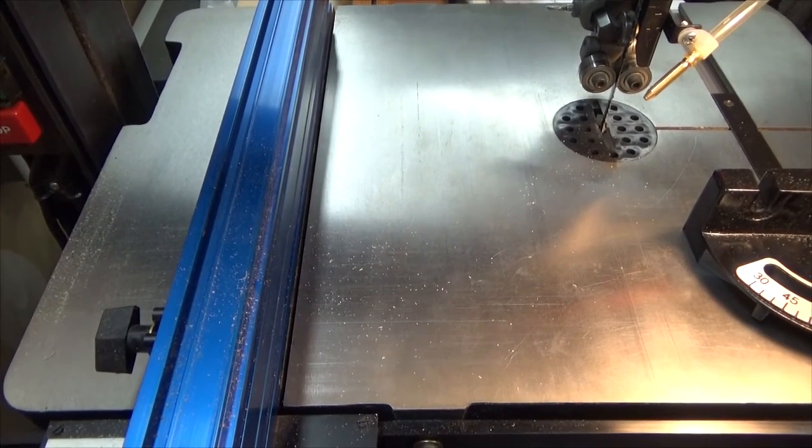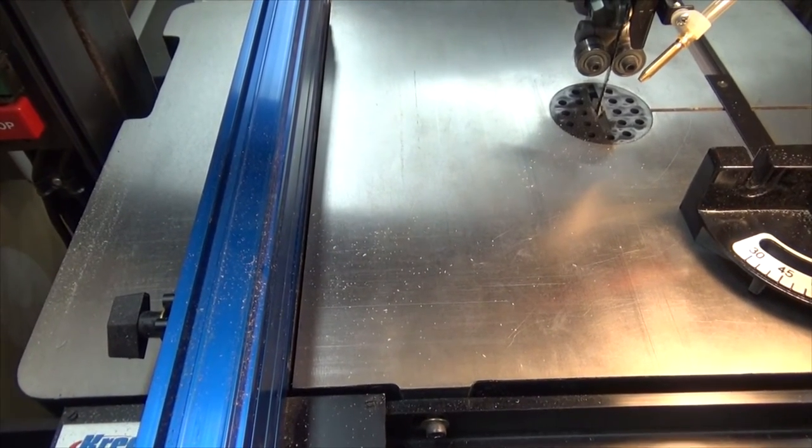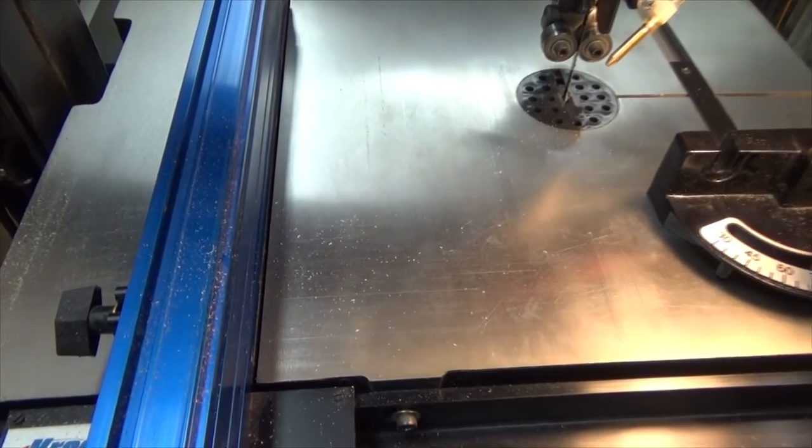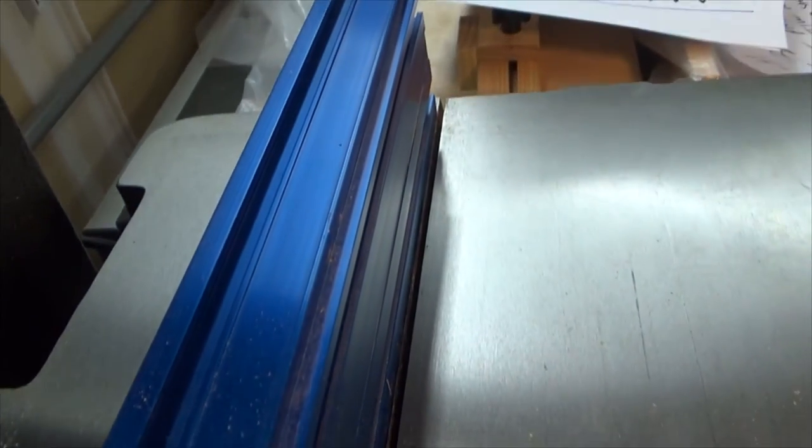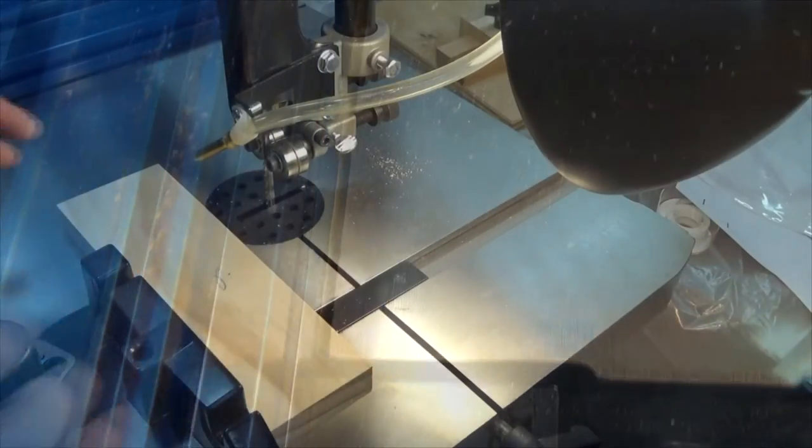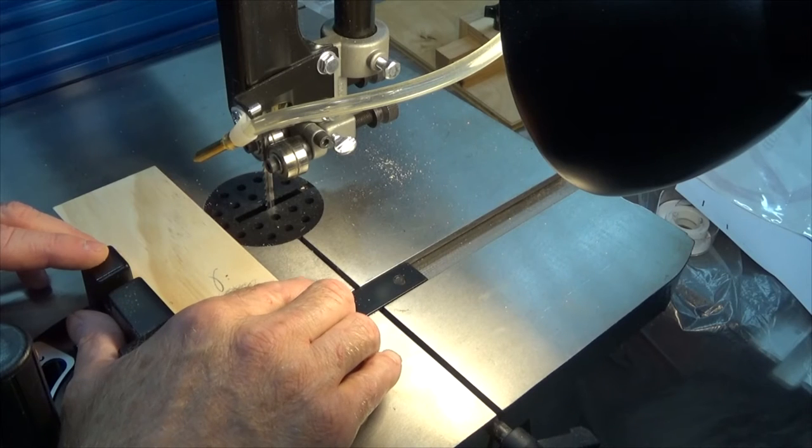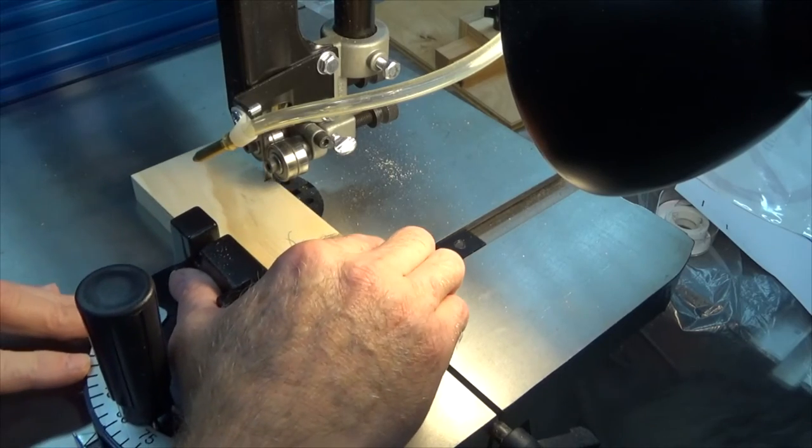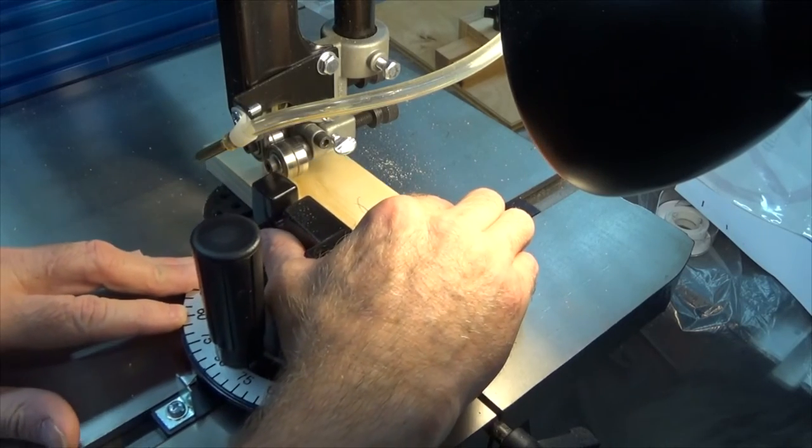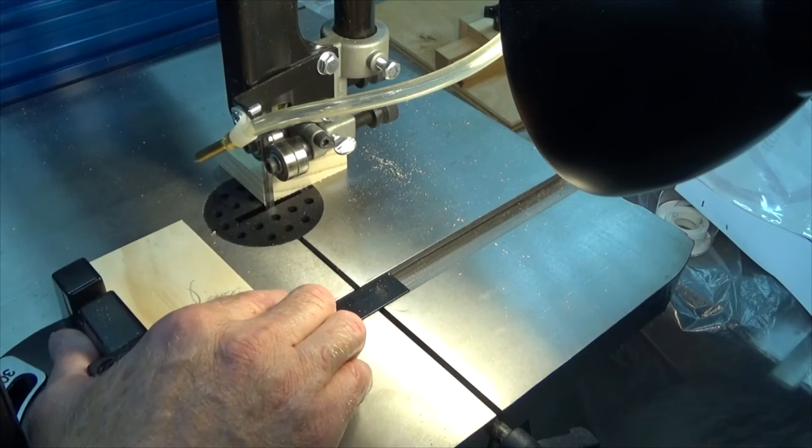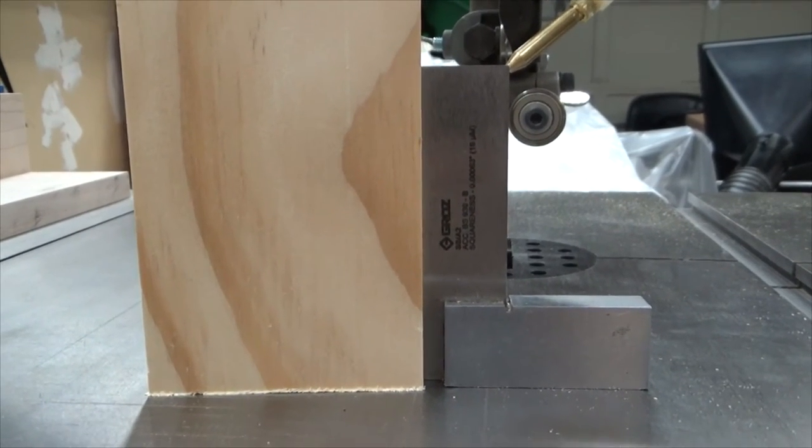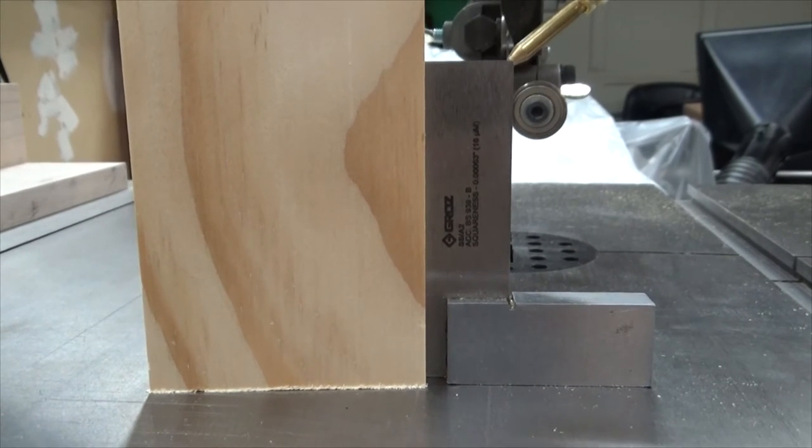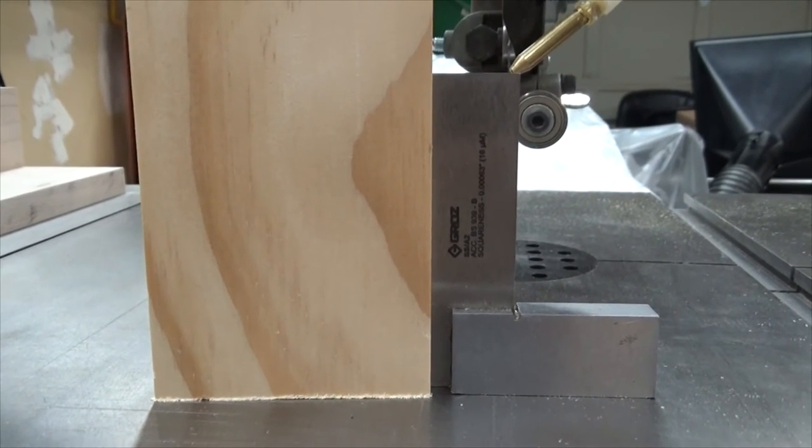My bandsaw fence is set up exactly parallel with the bandsaw table and the miter gauge slot. If you look closely at the edge, you'll see that it's exactly equal distant from the edge of the table, all the way down. Now I'm going to make a 90 degree cut using the miter gauge. The board is placed on the flat surface with the freshly cut edge down. As you can see, it is a nice 90 degree cut.